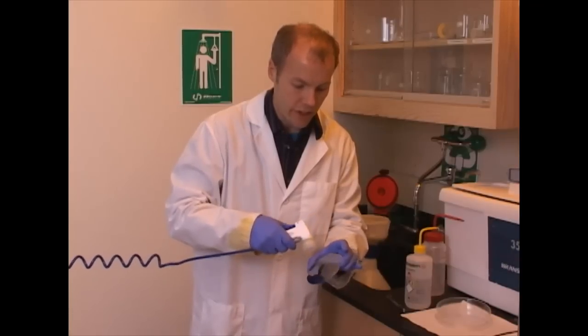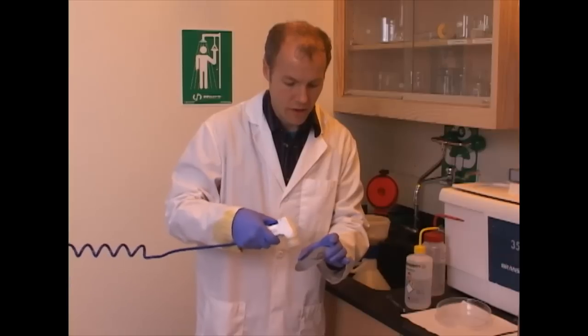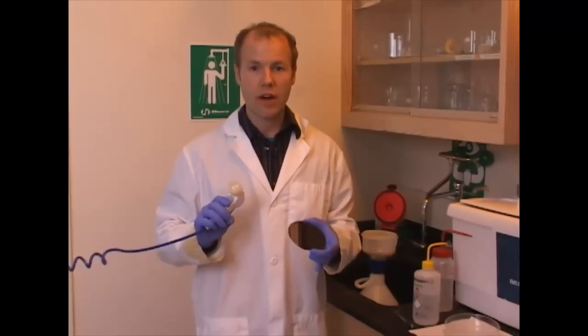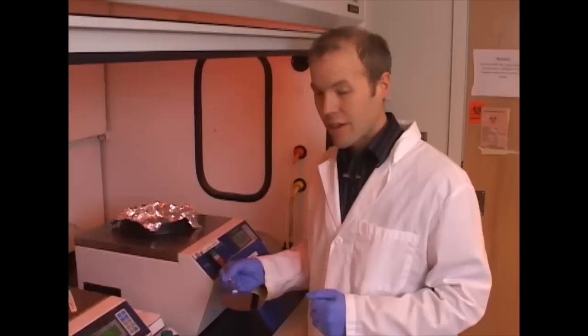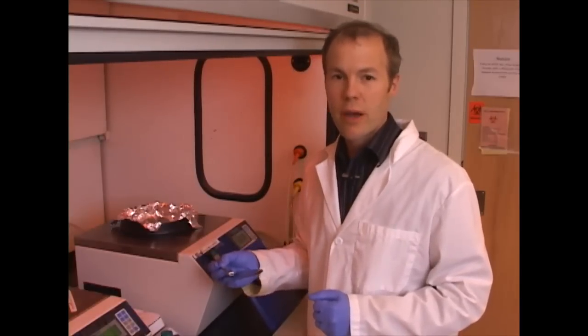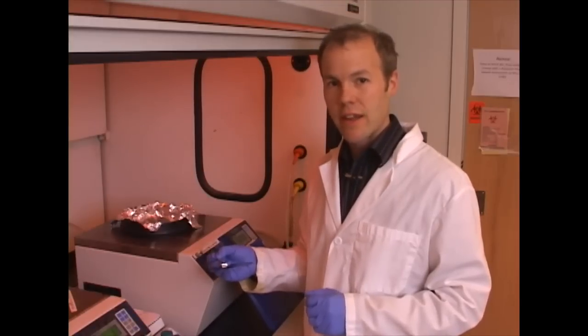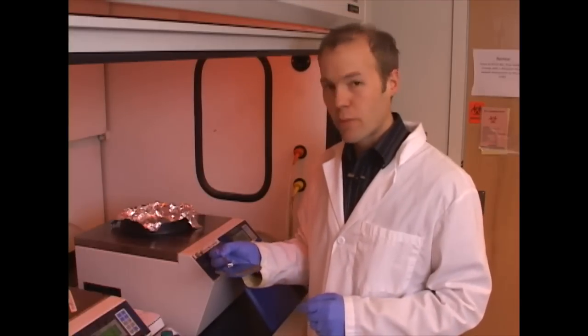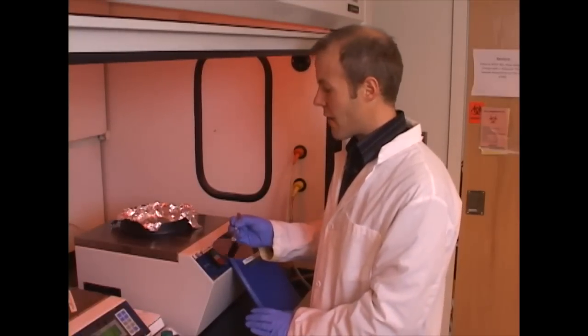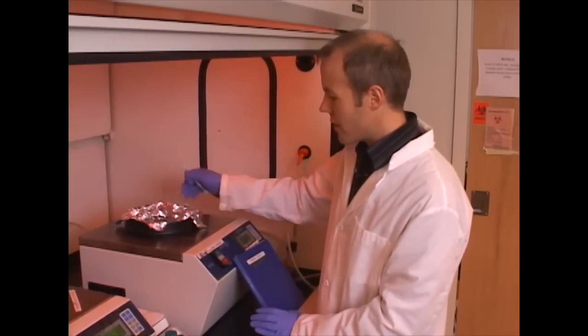Once this wafer is clean, I can spin coat it with the e-beam sensitive resist and make sure that the bonding to the surface is good. The thickness of the resist layer on the wafer can be controlled by playing with the viscosity of the resist that we're applying and also the speed that it's spinning at. I'm going to use this spin coating machine here that has a vacuum chuck on top. I just set the clean wafer in the center.